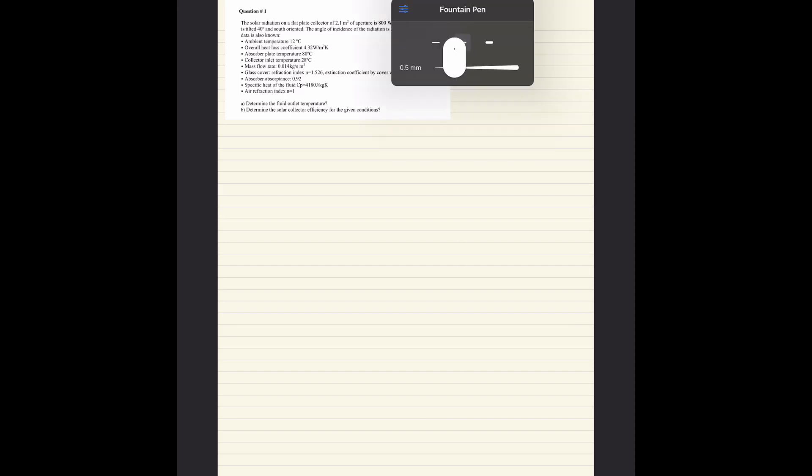Okay let's start by solving this question together about flat plate solar collectors. Question one: the solar radiation on a flat collector is 2.1 meter squared of aperture is 800 watts per meter squared. The collector is tilted to 40 degrees and south oriented. The angle of incidence of the radiation is 20 degrees.